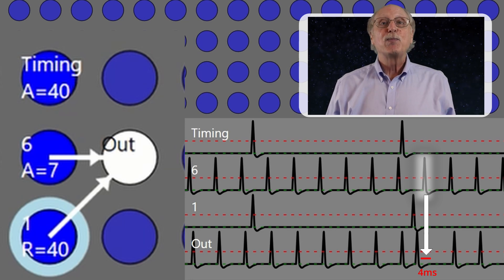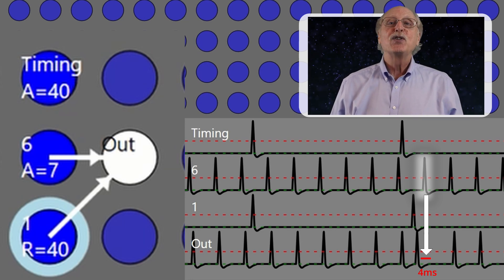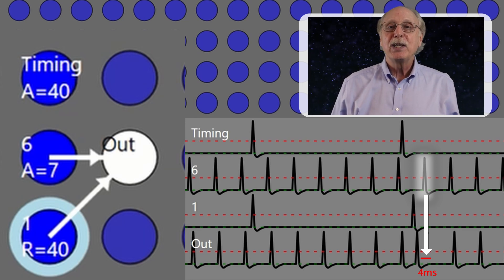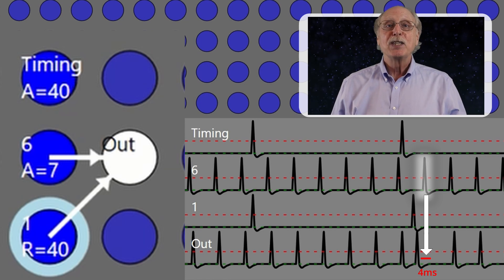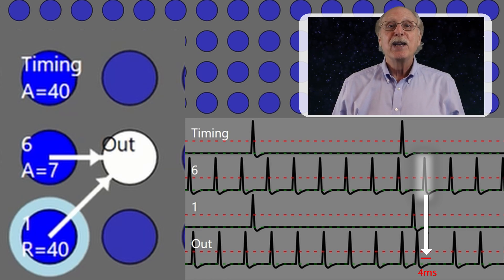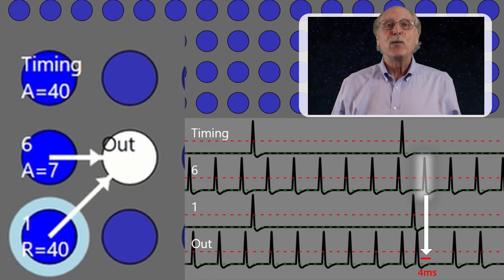Therefore, if spikes are evenly distributed, there is no possibility that 6 spikes plus 1 spike will ever equal anything but 6 spikes. If the spikes are randomly distributed, there is some possibility that a neuron might compute that 6 plus 1 equals 7, but the probability is remote and varies with the distribution of spikes.